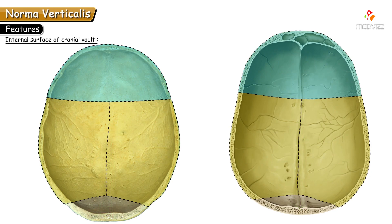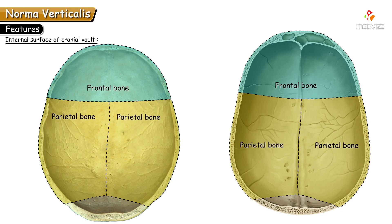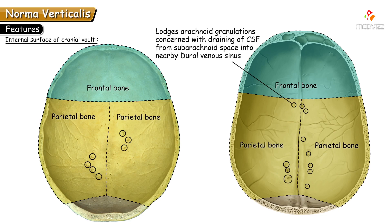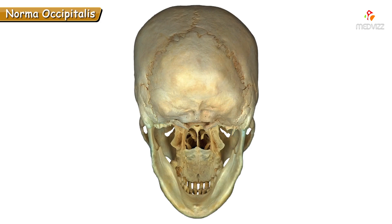The inner surface of the frontal and parietal bones along the sagittal suture is uneven, exhibiting pits or irregular depressions. These pits lodge arachnoid granulations, which are concerned with draining CSF from the subarachnoid space into the nearby dural venous sinus — the superior sagittal sinus.